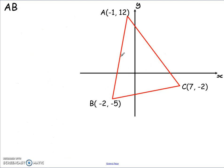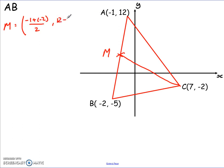The second median I wanted was the median of line AB — the median going from point C to the midpoint of AB. Again, I need to calculate a midpoint M, then use that to get the gradient. Midpoint M: negative 1 plus negative 2 divided by 2, and 12 plus negative 5 divided by 2. Negative 1 minus 2 is negative 3, divided by 2 gives negative 3 over 2. 12 minus 5 is 7, divided by 2 gives 7 over 2. So my midpoint M is (−3/2, 7/2).